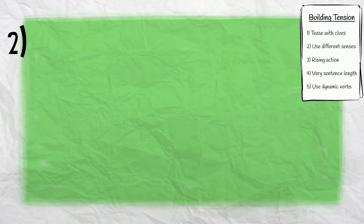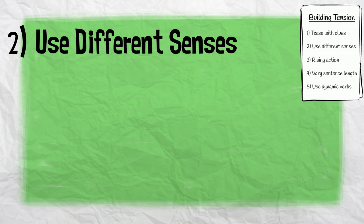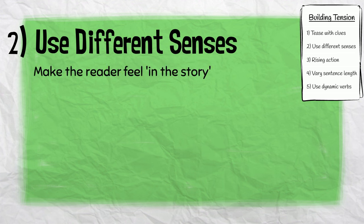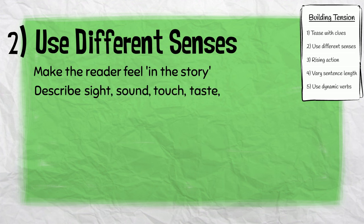Number two: use different senses. To ensure the reader feels the tension, it's important to make them feel as though they are there in the story. We can do this by using language to describe different senses — sight, sound, touch, taste and smell.